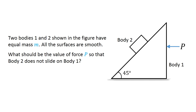Two bodies, 1 and 2, shown in the figure have equal mass m. All the surfaces are smooth. What should be the value of force p so that body 2 does not slide on body 1?